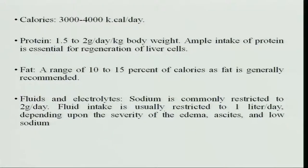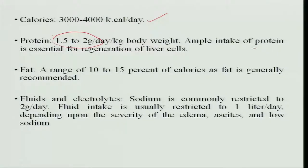How much calories to give? Supply 3000 to 4000 kilocalories — the normal intake is around 2000, so increase it almost one and a half to two times normal. Protein normal intake is 1 gram per kg body weight, whereas for liver disease you increase it to 1.5 to 2 grams per kg body weight. Ample intake of protein is essential for regeneration of liver tissues.